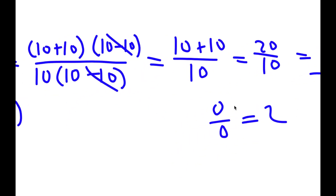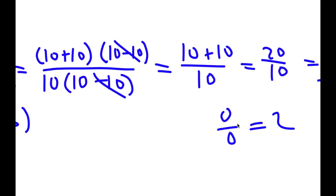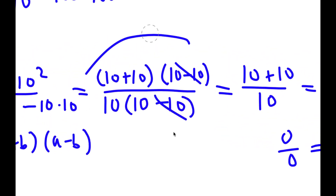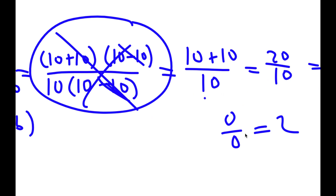Obviously 0 over 0 is not equal to 2. If you're wondering where the error is in this proof, it's in the step when I canceled out the 10 minus 10 over 10 minus 10. 10 minus 10 is simply 0. So 0 divided by 0 — remember, that's not equal to 1. 0 divided by 0 is indeterminate. So I can't actually cancel these two out, because that implies 0 divided by 0 is 1, which it's not. So this is wrong, and 0 divided by 0 is not 2.